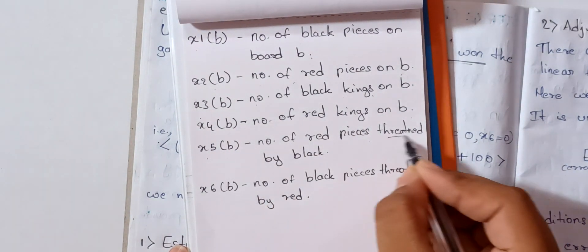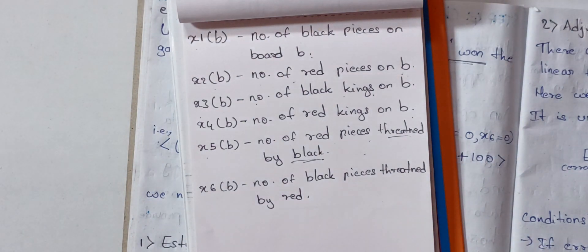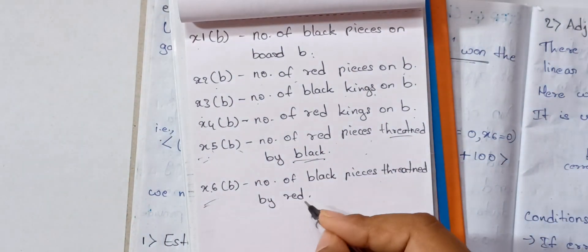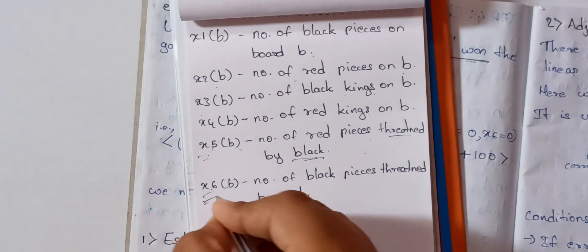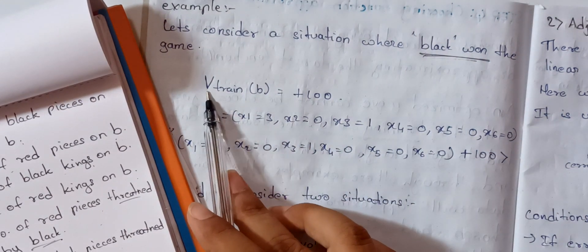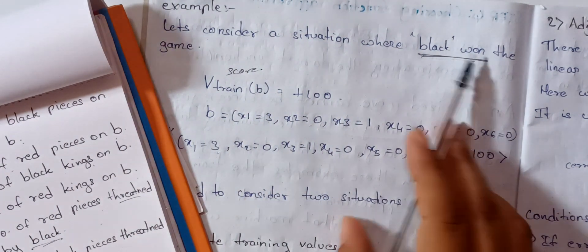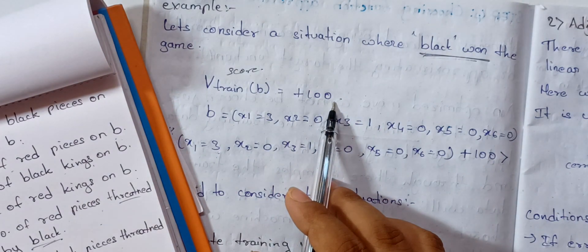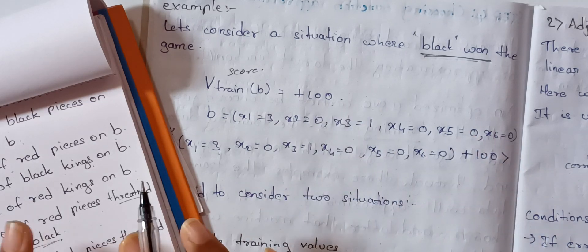We will represent every situation functionally: x1 is the number of black pieces on board B, x2 is the number of red pieces on board B, x3 is the number of black kings on board B, x4 is the number of red kings on board B. x5 is the number of red pieces threatened by black — that is, red pieces that can be killed in the next move by black. x6 is vice versa — the number of black pieces threatened by red. The board score v_train(b) is plus 100 because this is a winning state.